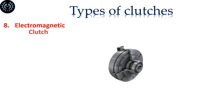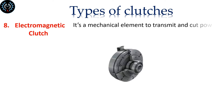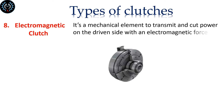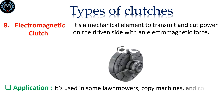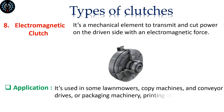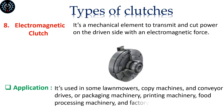Electromagnetic clutch. It's a mechanical element to transmit and cut power on the driven side with an electromagnetic force. It's used in some lawn mowers, copy machines and conveyor drives, or packaging machinery, printing machinery, food processing machinery and factory automation.